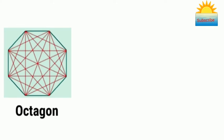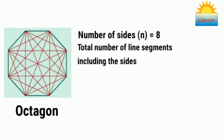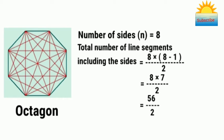Consider another example. In an octagon, the number of sides is 8. So the total number of line segments including the sides is 8 × (8-1) / 2, that is equal to 8 × 7 / 2, or 56 / 2, which is equal to 28.